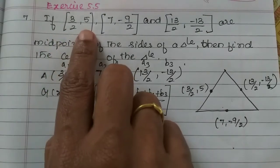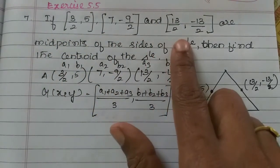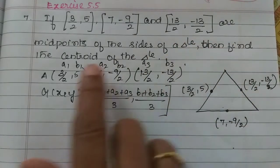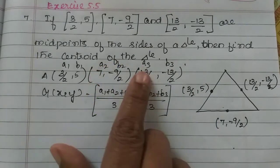This is (3/2, 5), then (7, -9/2), and (13/2, -13/2) are midpoints of the sides of the triangle. Then find the centroid of the triangle.